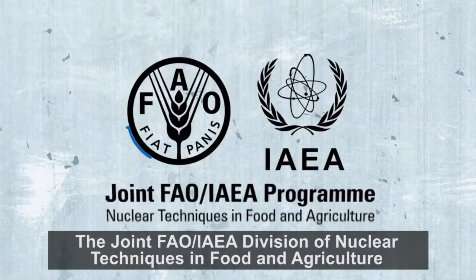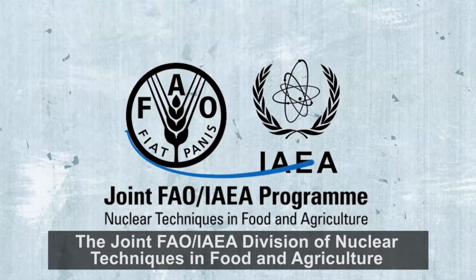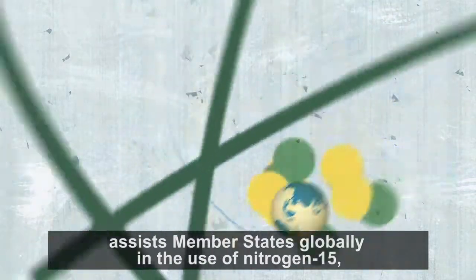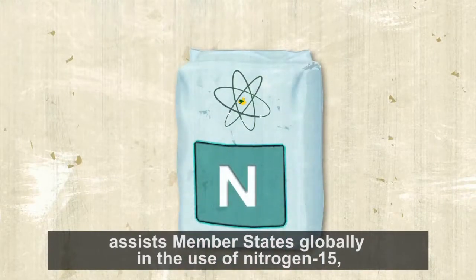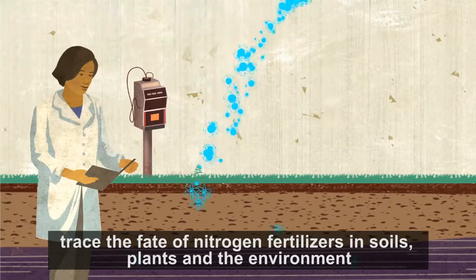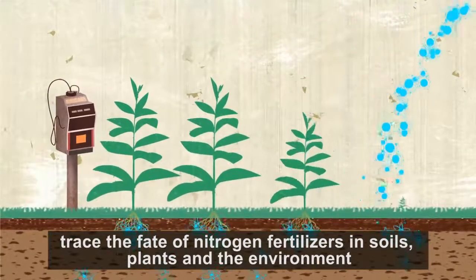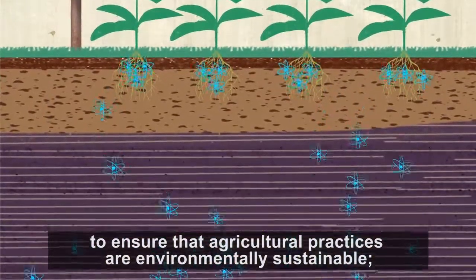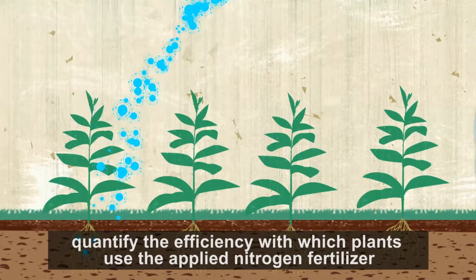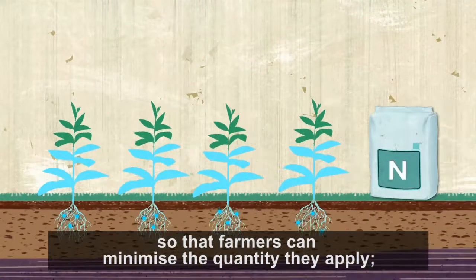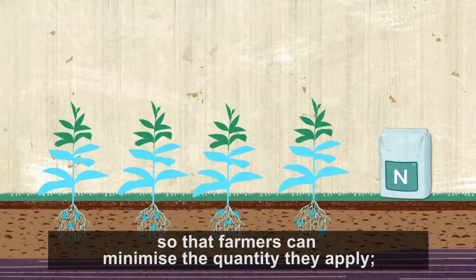The joint FAO/IAEA Division of Nuclear Techniques in Food and Agriculture assists member states globally in the use of nitrogen-15, introducing methods to trace the fate of nitrogen fertilizers in soils, plants, and the environment — to ensure that agricultural practices are environmentally sustainable and to quantify the efficiency with which plants use applied nitrogen fertilizer, so that farmers can minimize the quantity they apply.